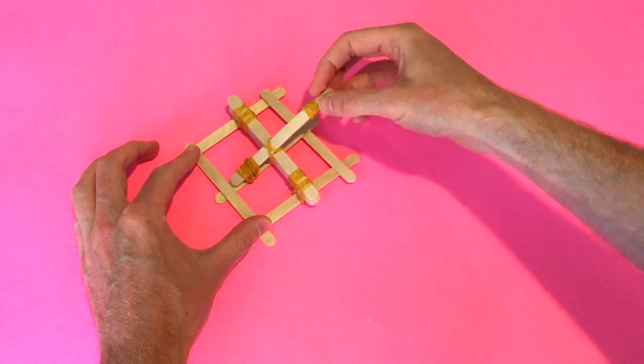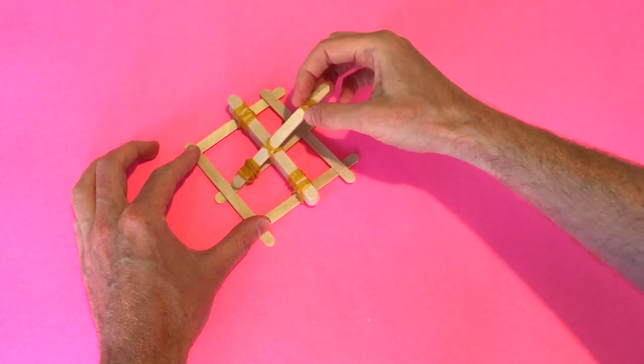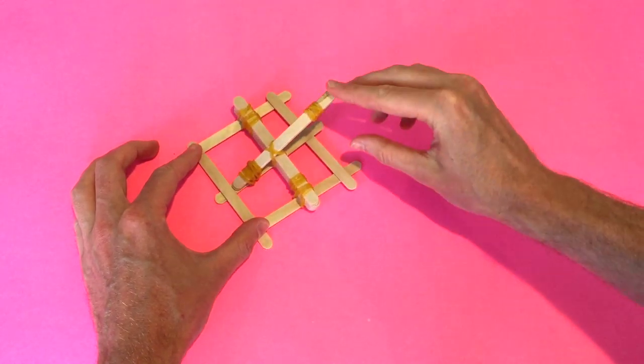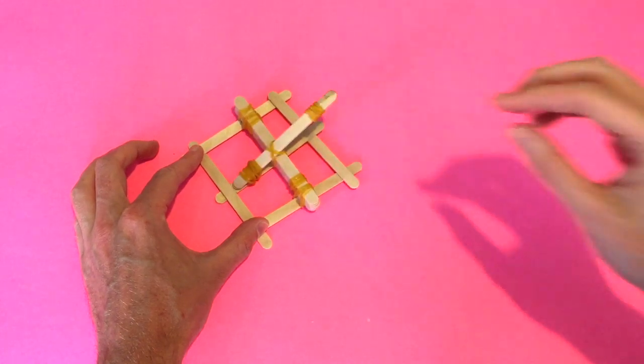So you might like to get a bottle top and attach it to this top area here, which will help secure any items that you are firing. That's how you make a popsicle stick catapult. Hope that you enjoy.